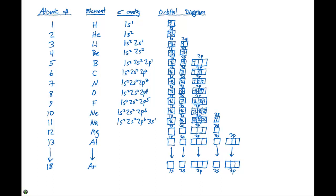For magnesium, we need to add one more electron than sodium to give us 12. So that's going to be 1s2, 2s2, 2p6, 3s2. We completely fill the 1s and 2s, completely fill the 2p, and now we completely fill the 3s.